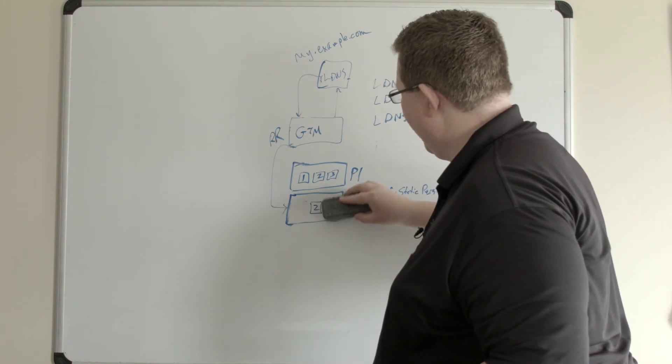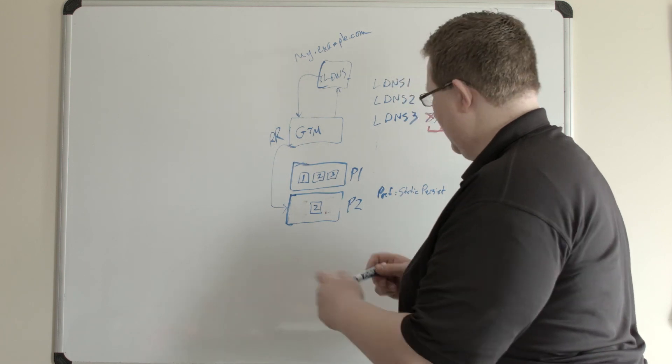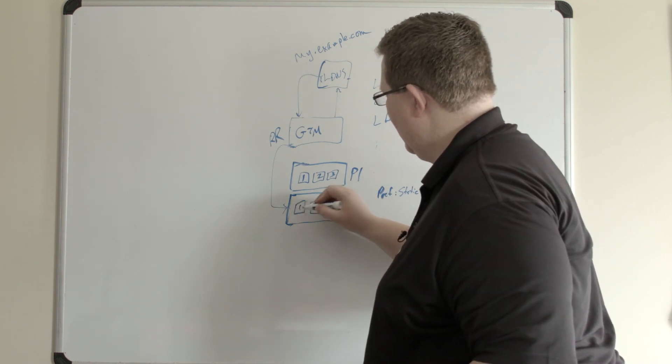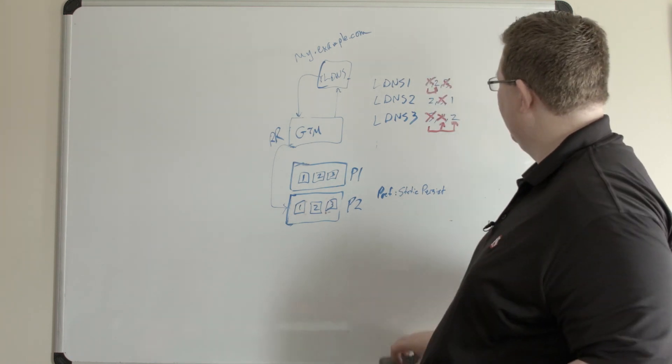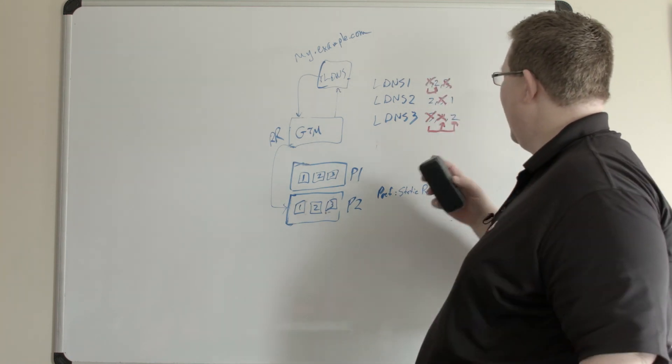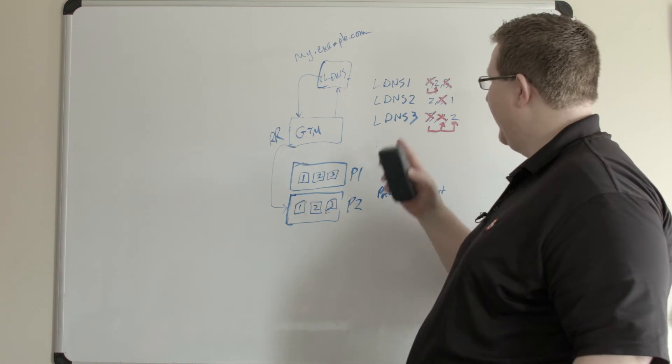When these servers are recovered and everything is well and they're back up, when everything's well then this goes back to normal. LDNS three will be returned to three, LDNS two still remains on two, LDNS one comes back to one.